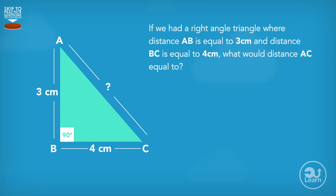For example, if we had a right angled triangle where distance AB is equal to 3cm and distance BC is equal to 4cm, what would distance AC equal to?